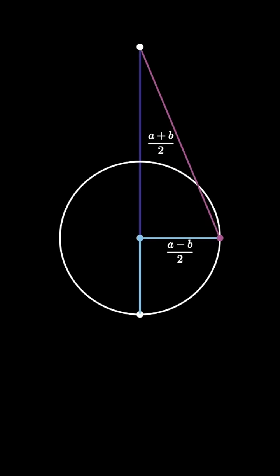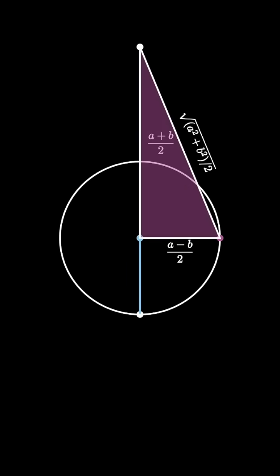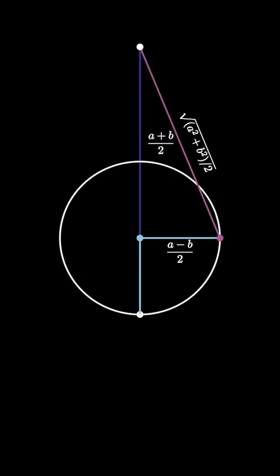Connecting these two points creates a right triangle with hypotenuse of length sqrt(a²+b²)/2 by the Pythagorean theorem. The hypotenuse is greater than the leg length, so (a+b)/2 is less than or equal to sqrt(a²+b²)/2.